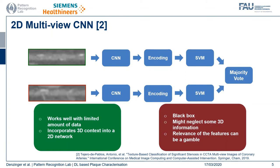The benefit of this approach is that it works well with a limited amount of data since the convolutional neural network does not need to be trained from scratch. It somewhat incorporates the 3D context into a 2D network by having the majority vote in the end. However, it is a black box again and the features extracted by the convolutional neural network can be a gamble. Also, the multi-view 2D representation might neglect some 3D information.